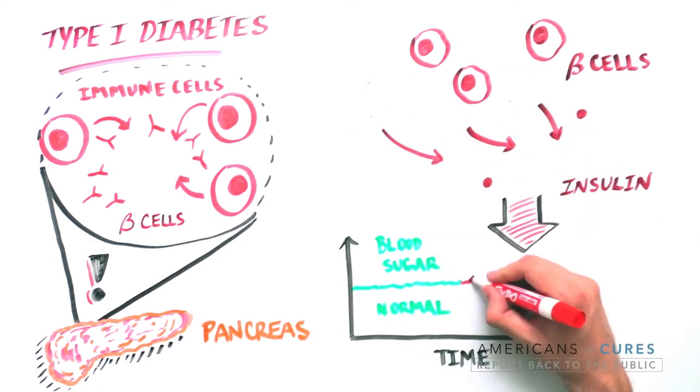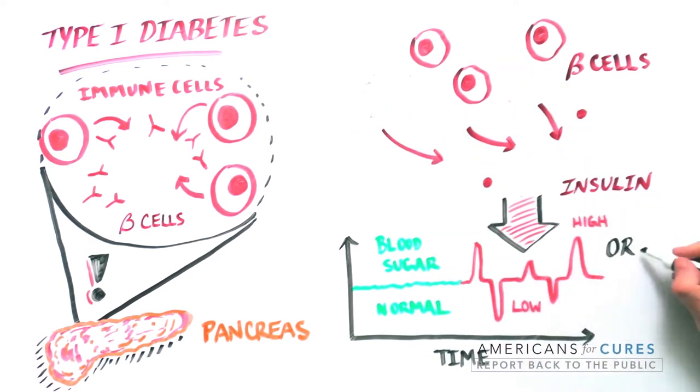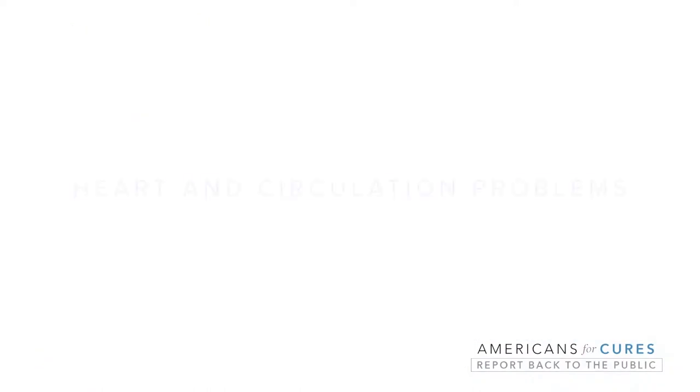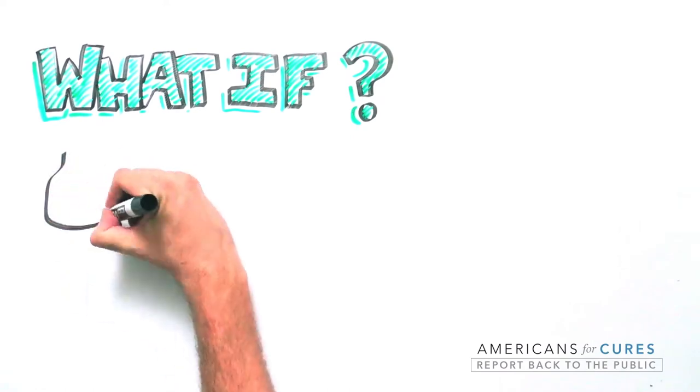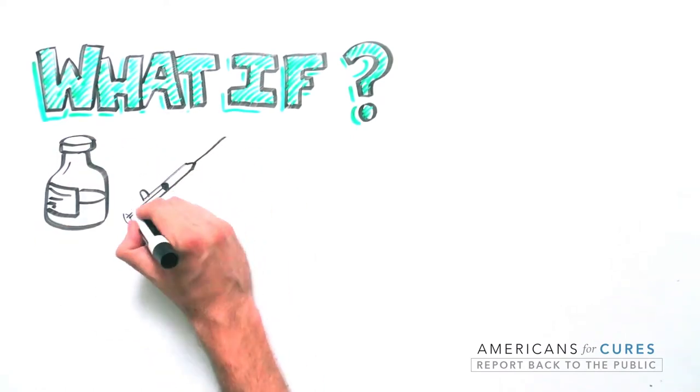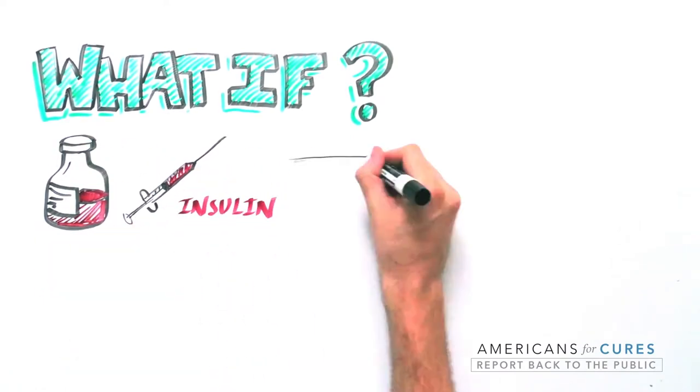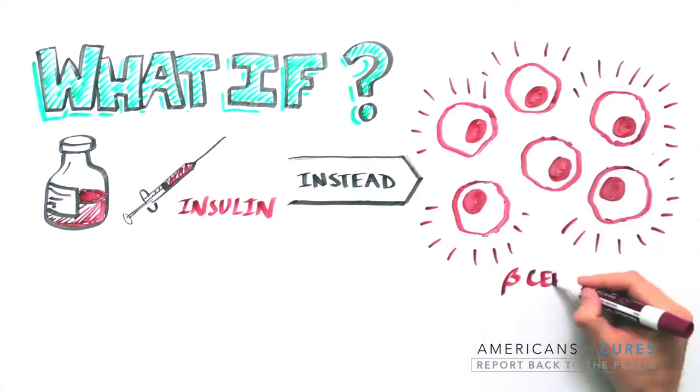Without them, very high or very low sugar levels cause organ and nerve damage, heart and circulation problems, and without treatment with insulin, death. What if, instead of trying to replace the function of the beta cells by injecting insulin, we replace the lost beta cells themselves?